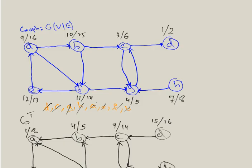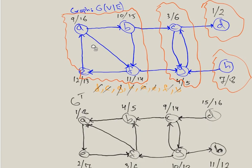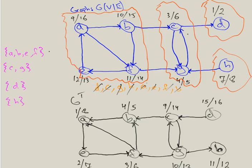So we can outline them in a different color. These are strongly connected components. Now the last step is to simply write them down. One set of strongly connected components is A, B, E, F. The next set is C and G. Then we have D by itself, and finally H by itself. These are the strongly connected components of this original graph — subgraphs within G that are strongly connected.